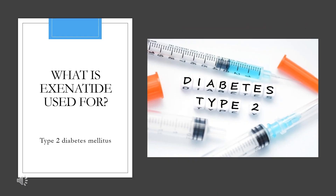Exenotide is indicated as an adjunct to diet and exercise to improve glycemic control in patients with type 2 diabetes. An extended-release formulation is available, which is indicated in patients greater than or equal to 10 years old, while the immediate-acting formulation is approved only for adult patients.